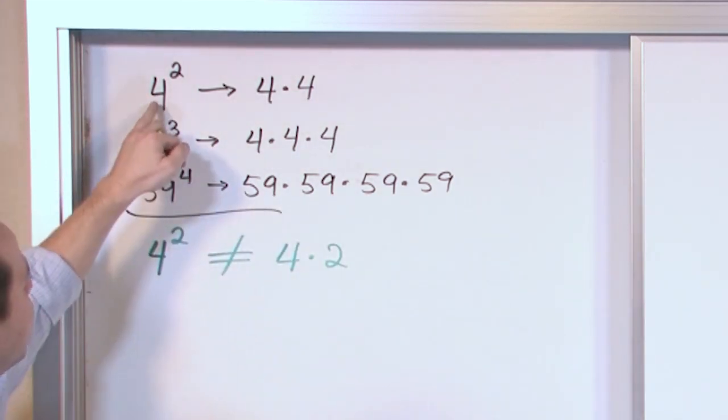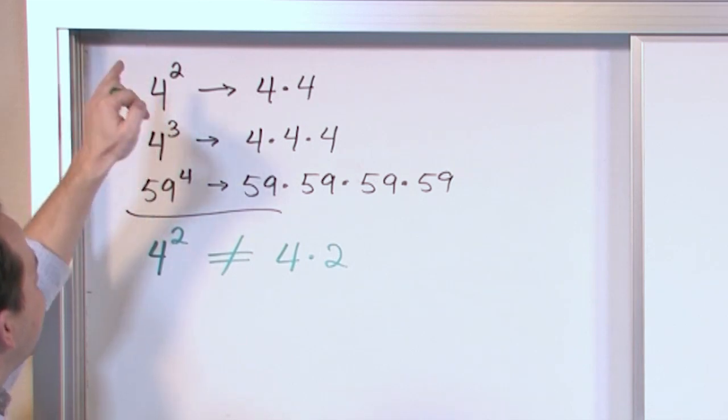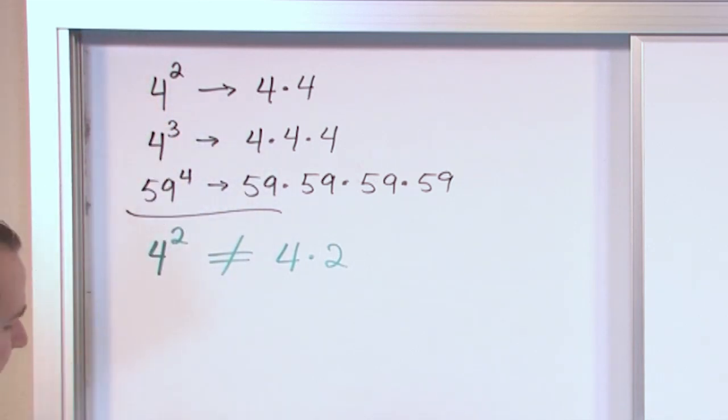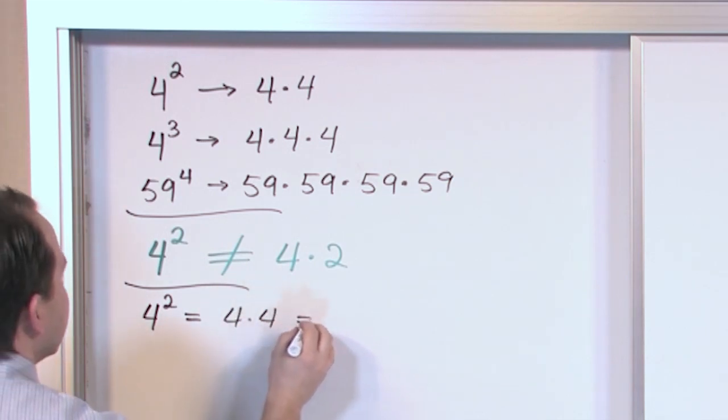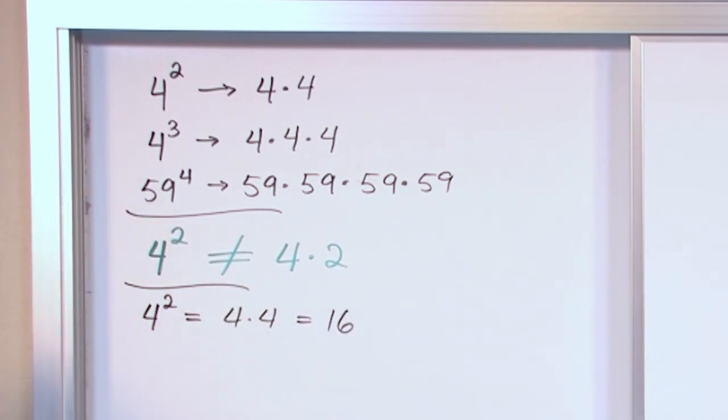What you're doing is you're multiplying the bottom number here by itself as many times as indicated by the number up there. So we already talked about it, but I'll just write it down. So for instance, four squared is equal to four times four is equal to sixteen. That's how you get that.